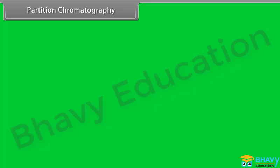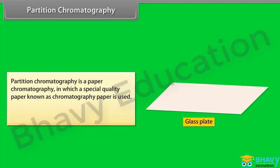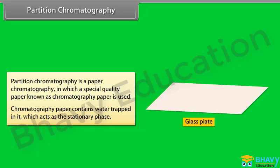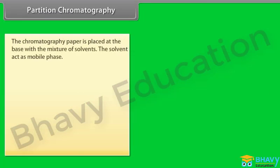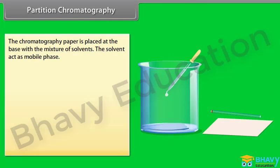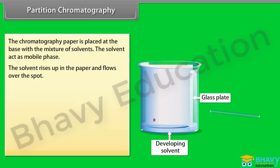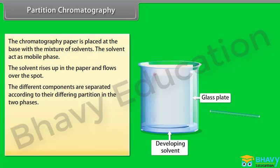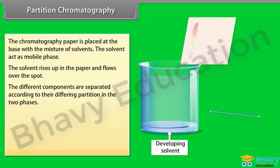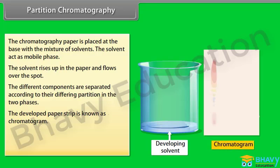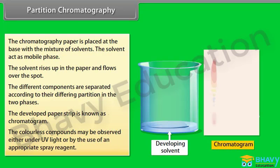Partition chromatography (Paper chromatography): In this method, a special quality paper known as chromatography paper is used. The chromatography paper contains water trapped in it, which acts as the stationary phase. The paper is placed with the mixture of solvents, which acts as the mobile phase. The solvent rises up the paper and flows over the spot, separating the different components according to their differing partition between the two phases. The developed paper strip is known as a chromatogram. Colourless compounds may be observed under UV light or by use of an appropriate spray reagent.